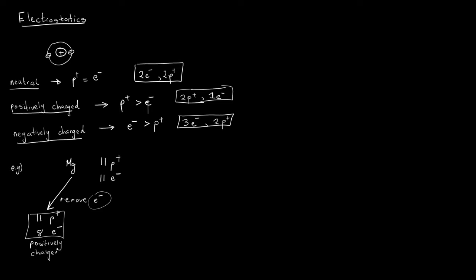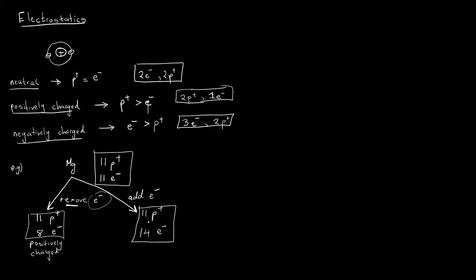We just made a neutral magnesium atom positively charged by removing electrons. We could also make it negatively charged — to do that, it must have more electrons than protons, so we add electrons. The original magnesium is neutral with 11 protons and 11 electrons. If we add 3 electrons, we still have 11 protons but now 14 electrons, giving us more negative charges than positive charges.